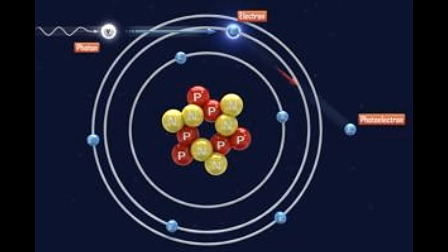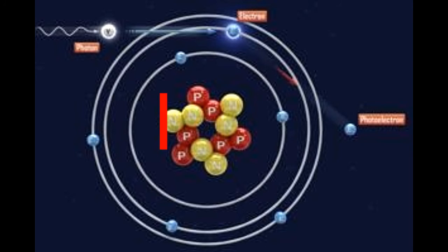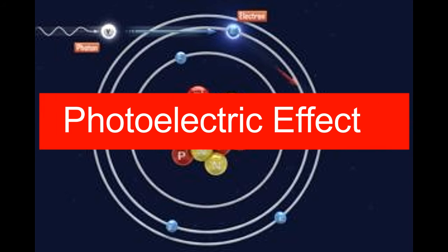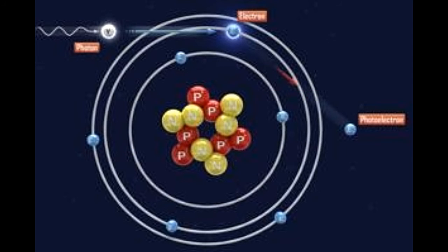Classical electromagnetic theory predicted that the number of electrons emitted and their kinetic energy is dependent on the intensity of light reflected from the surface. However, experiments show that the energy and number of electrons was a function of frequency. Using Planck's energy quantization rule E equals h nu, Albert Einstein conceptualized light as a stream of photons, successfully explaining the photoelectric effect in terms of light frequency.